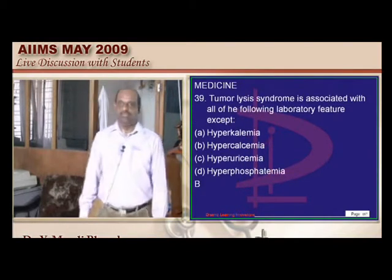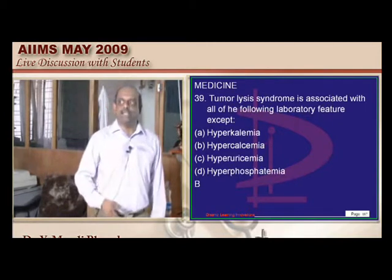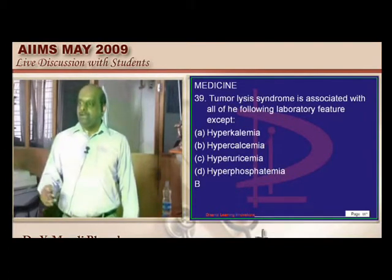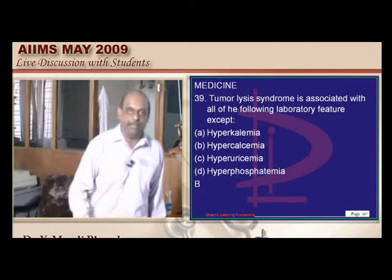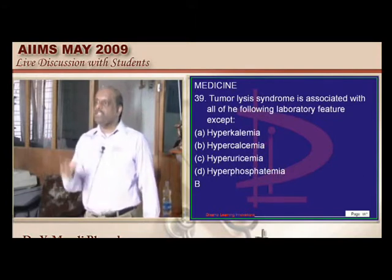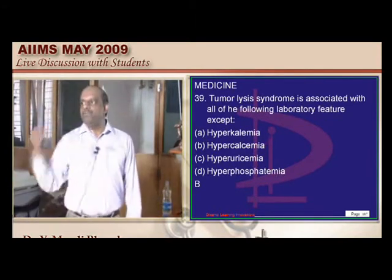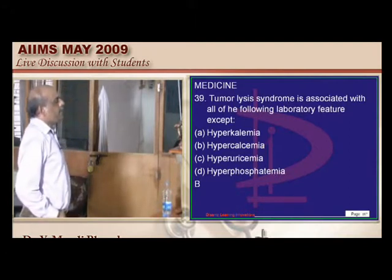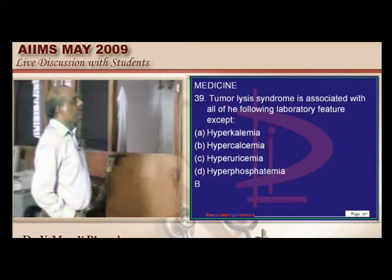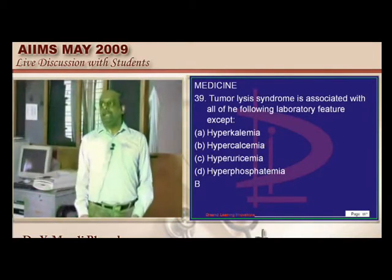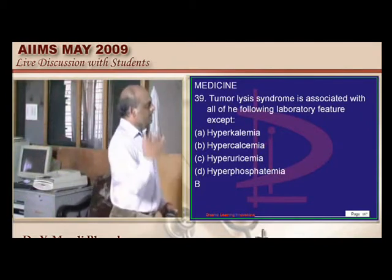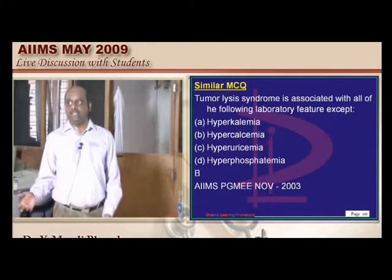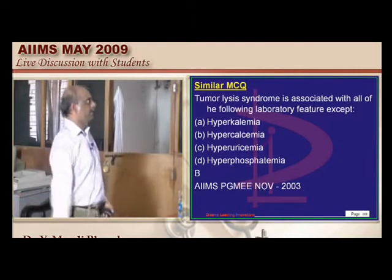Tumor lysis syndrome — which specific tumors lead to it? Lymphoreticular malignancies, lymphomas, and APML (acute promyelocytic leukemia among the AML) also lead to tumor lysis. When tumor lysis occurs, all intracellular ions go out — hyperkalemia, hyperuricemia, hyperphosphatemia. All this phosphate binds with calcium leading to hypocalcemia, not hypercalcemia. This was a question in multiple previous entrances.